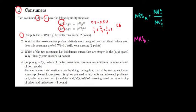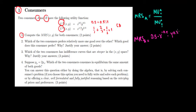The MRS of consumer A equals the derivative of the utility with respect to good X, where X is the variable and everything else is constant. Differentiating X to the power 0.5 gives 0.5 times X to the power of minus 0.5, multiplied by the constant Y to the power of 0.5.